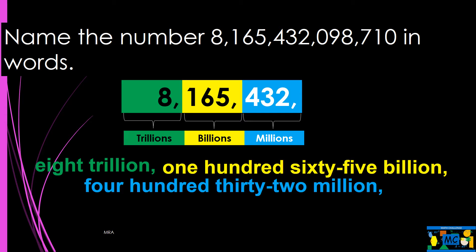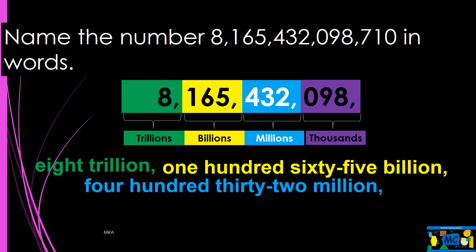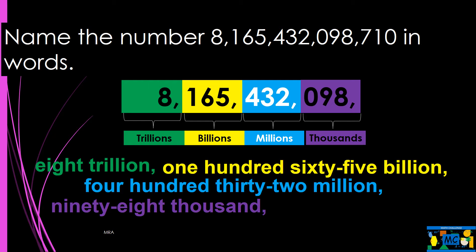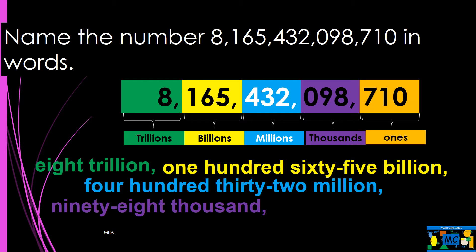The next period to the right is thousands, so write 98 in words, followed by the period's name, thousand. The rightmost period shows the ones — just write 710 in words. There is no need to write its period's name.